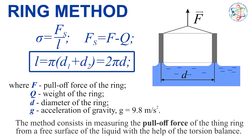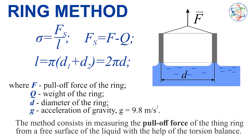However, since the ring is thin, we neglect the difference between the external and the internal diameter. Therefore, our final formula is 2 times π times d.